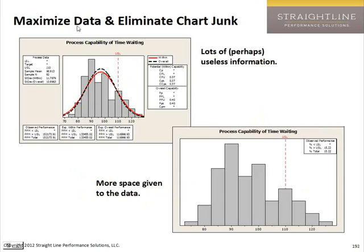Here are some before and afters from our nightmare gallery. If we really want to show the chart well, here's an example: we're not fitting a normal distribution because the data are not normal — we're just showing process capability. There's our line, and here the data are starting to star. I don't claim these are perfect, but they're certainly much improved — much easier to look at and understand what's going on.